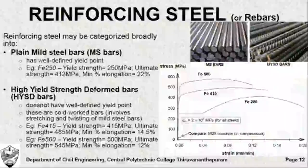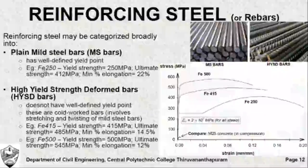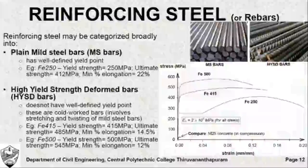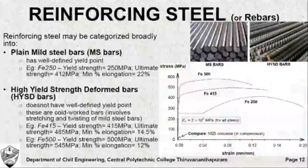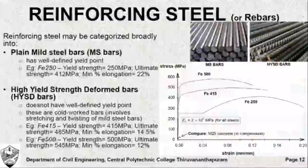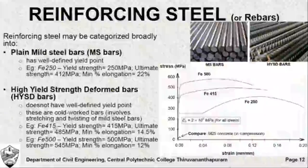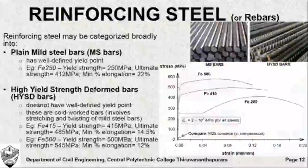The plain mild steel bars are generally of the grade FE 250, meaning the yield strength of that grade of steel is 250 MPa. HYSD bars are available in two grades: FE 415 and FE 500, with yield strengths representing 415 MPa and 500 MPa respectively.